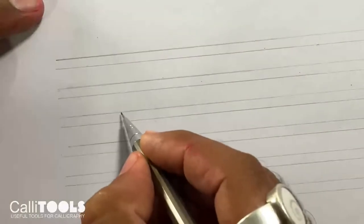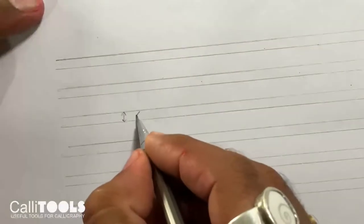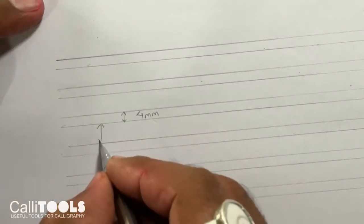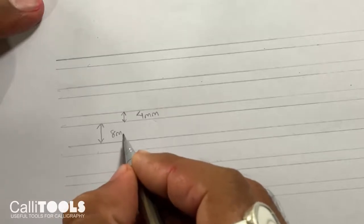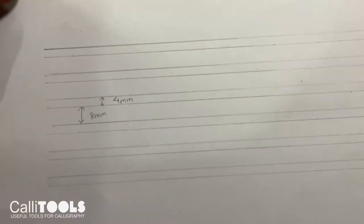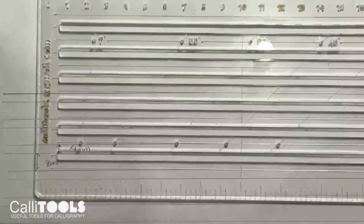You can see this. So this is 4mm and this is 8mm. And this is the 5 different angles. How do we use it?